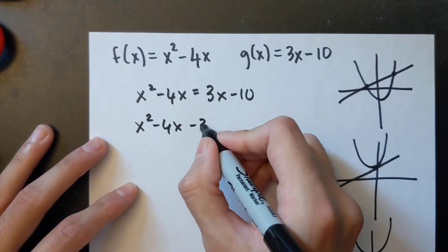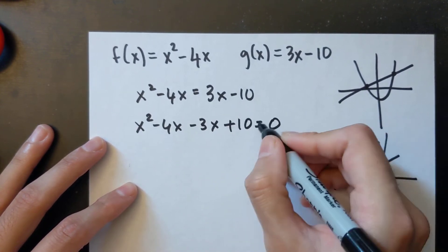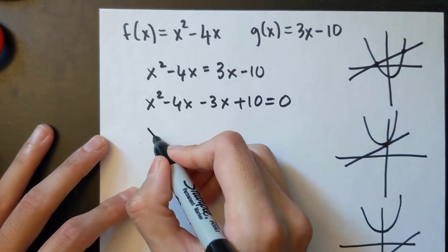I'm going to move the 3x and the negative 10 to the other side and change the signs. Then you can combine like terms if possible.